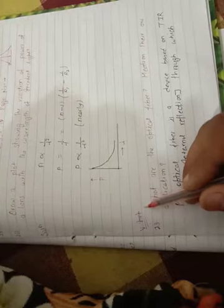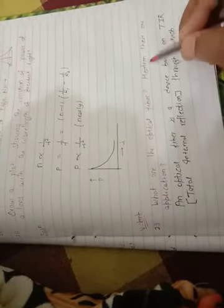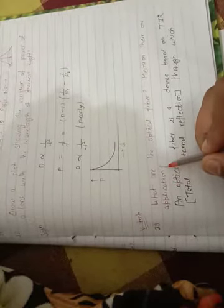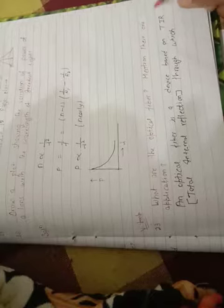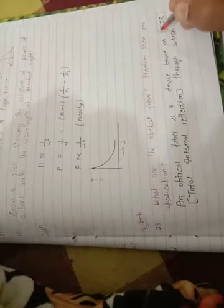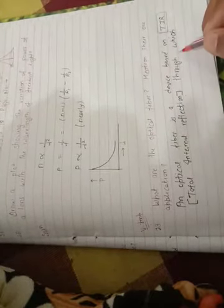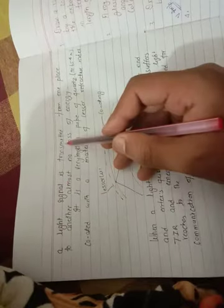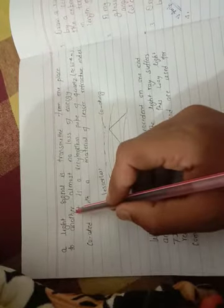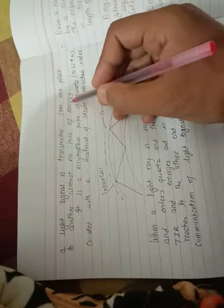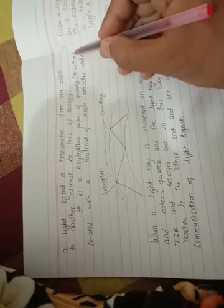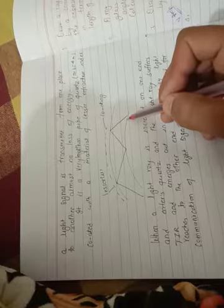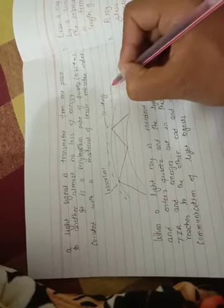What are optical fibers? Mention one application. An optical fiber is a device based on TIR, that is total internal reflection, through which a light signal is transmitted from one place to another with almost no loss of energy. It is a very long and thin pipe of quartz, on the order of 10 to the power minus 4 meter. You see this red colored pipe, it is made of quartz.